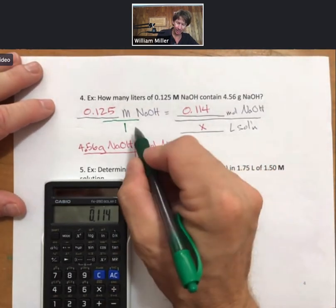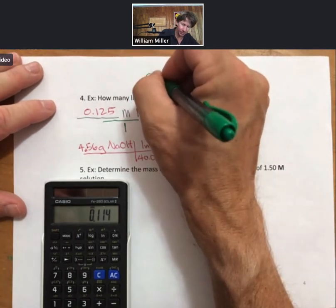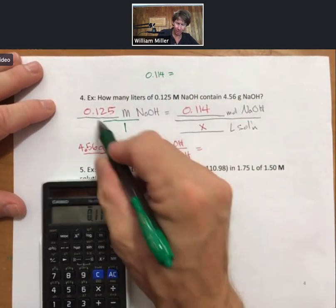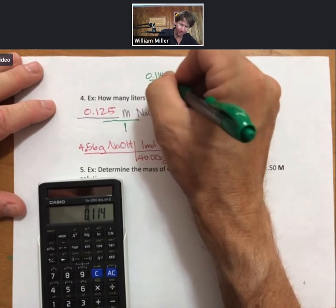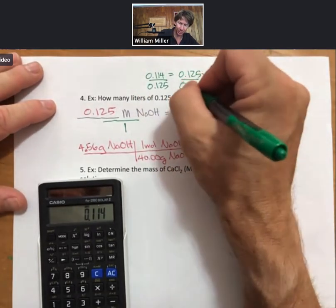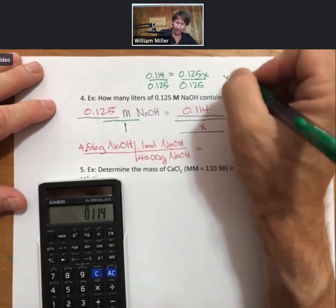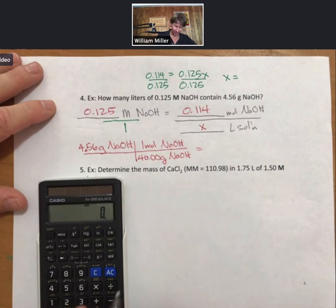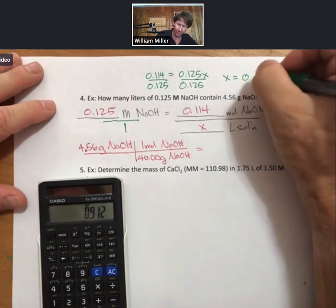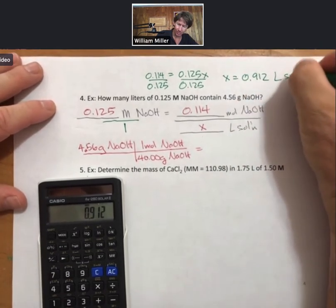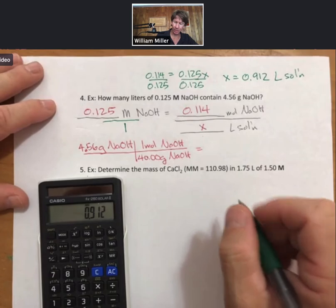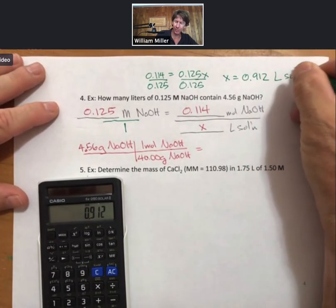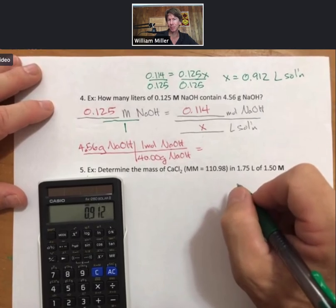I know that 0.114 equals 0.125 times x. Divide through both sides by 0.125 and I get that x equals 0.114 divided by 0.125, 0.912 liters of solution is my answer to this problem, number four. I can also write 0.912 liters of sodium hydroxide solution to be even more specific. Either answer is okay.